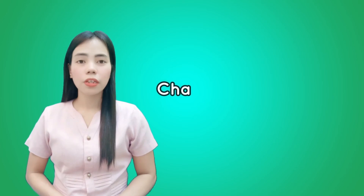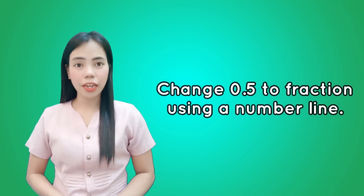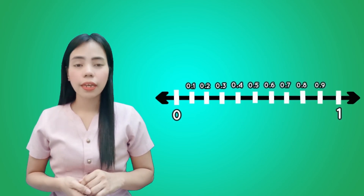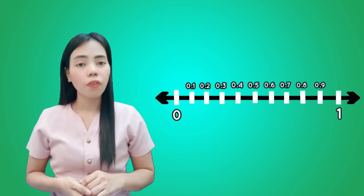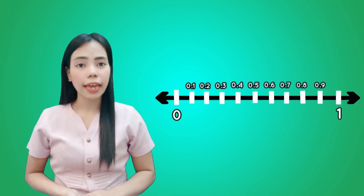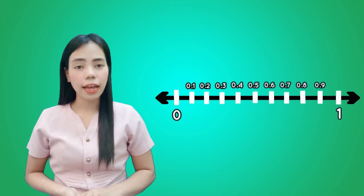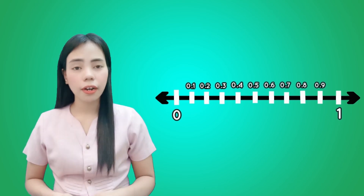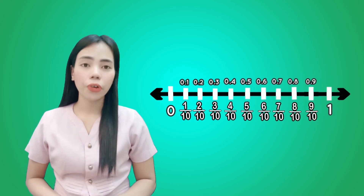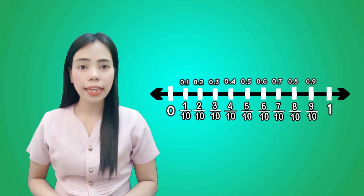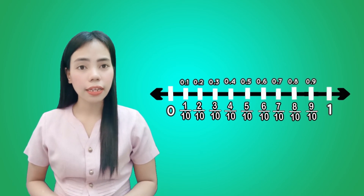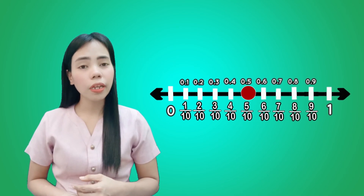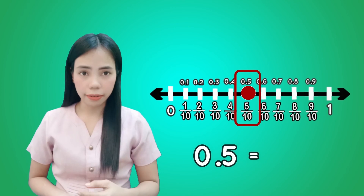Let's have another example. Change 5 tenths to a fraction using a number line. Divide the segment into 10 equal parts and label the marks from left to right as 1 tenth, 2 tenths, 3 tenths, 4 tenths, 5 tenths, 6 tenths, 7 tenths, 8 tenths, 9 tenths, and 10 tenths. We write 10 tenths as 1. Now, plot 5 tenths on the number line. Using the number line, you will see the equivalent fraction of 0.5 is 5 over 10.